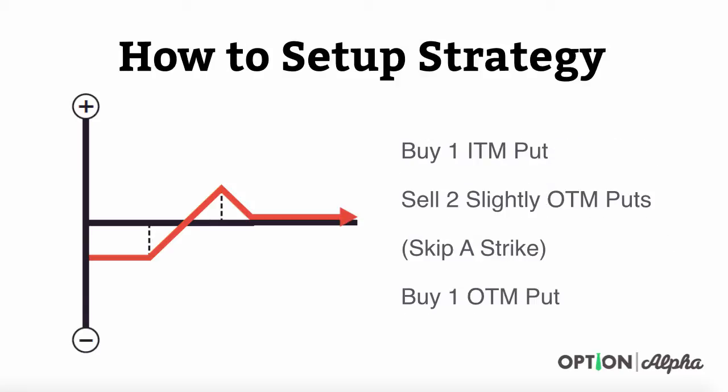Here's exactly how you set up this strategy. The first thing you're going to do is buy one in-the-money put option that's just slightly in the money from where the stock is trading right now — a put option that's higher than where the stock is trading. Next, you're going to go down to the next strike and sell two of these slightly out-of-the-money put options, targeting them just below where the stock is trading right now. That gives you the maximum amount of extrinsic value or time value in those options.